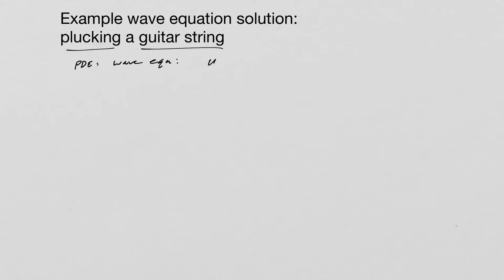We know that's going to be U_TT is equal to C squared U_XX. So let's do a specific version of this. We're going to leave C as a parameter.